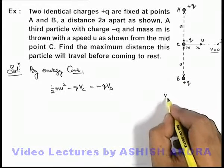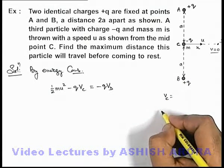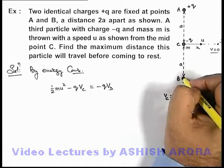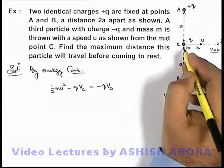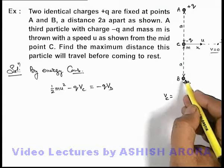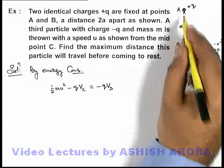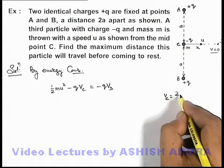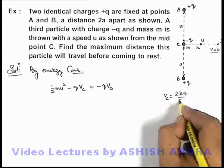Here Vc and Vd can be independently calculated. As point C is at a distance a from these two charges, the potential at point C due to this q will be kq/a, and the same is due to this, so Vc can be written as 2kq/a.